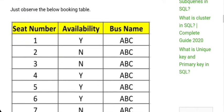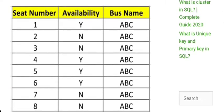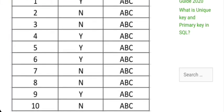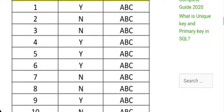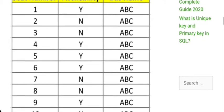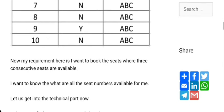If you observe this table from a bus ticket booking system, it has seat number, availability, and bus name. Seat number 1 is available, seat 2 is not available, seat 3 is not available, seat 10 is not available. I only need seats 4, 5, and 6, which are three consecutive available seats — I want to capture only those records from this table.